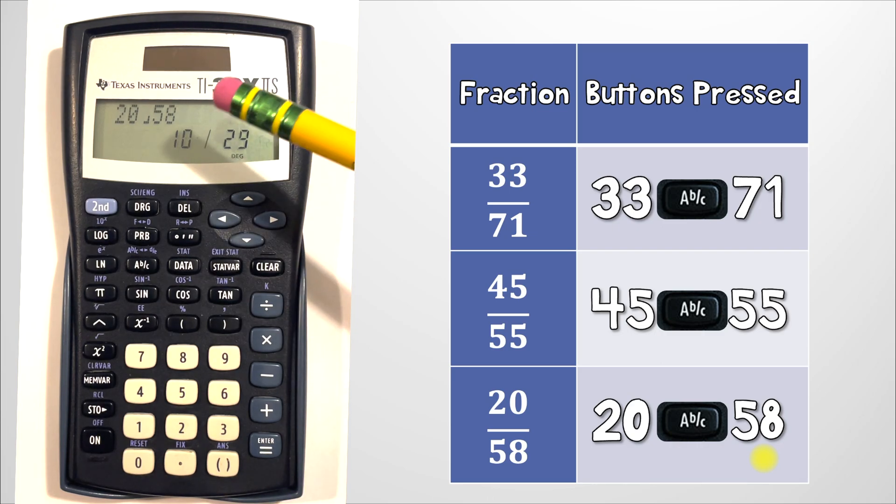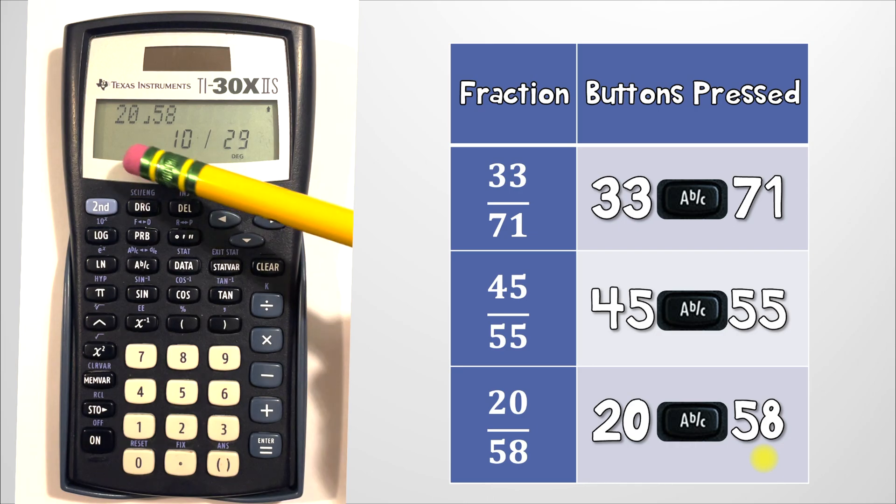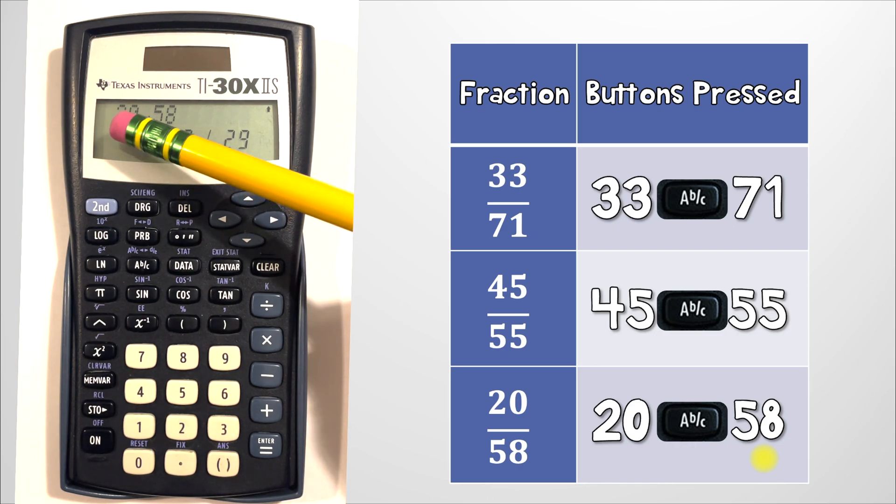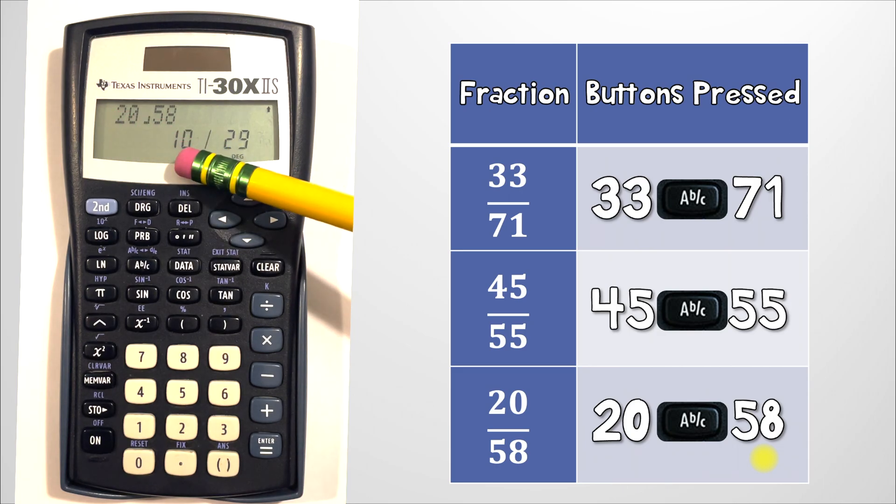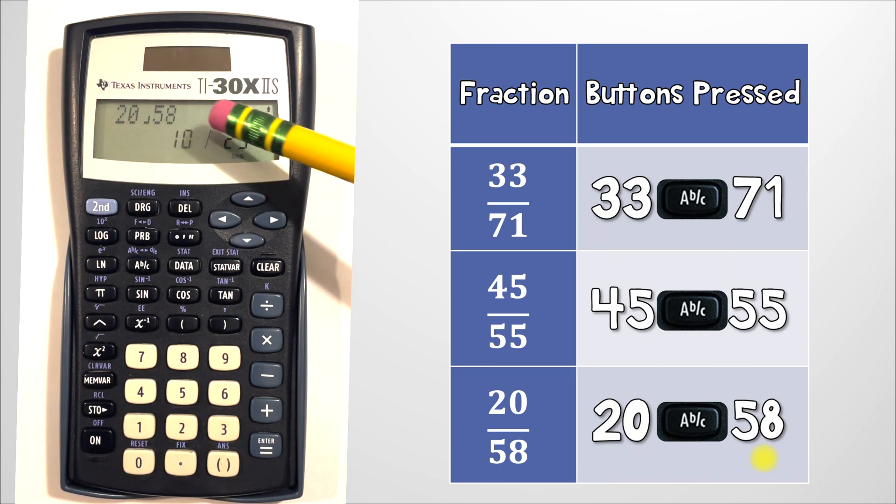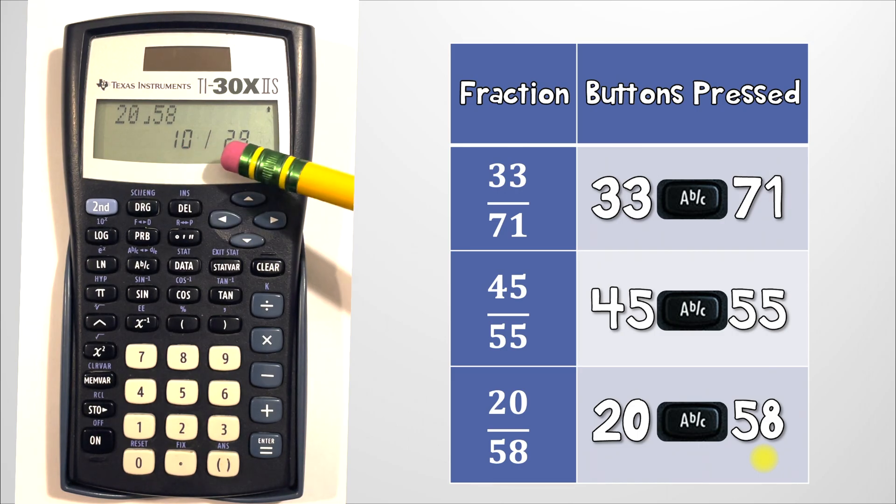But remember this can be simplified and the calculator did that for you. So even though you entered 20 bracket 58 and as a fraction that would be 20 over 58, the calculator simplified it for you. 20 divided by 2 is 10 and 58 divided by 2 is 29. And that's why your final answer is 10 over 29.